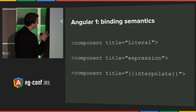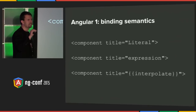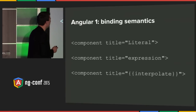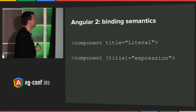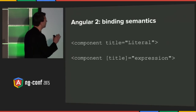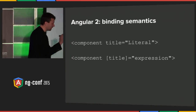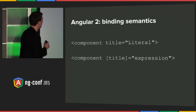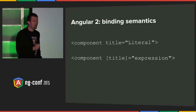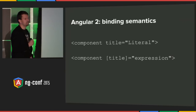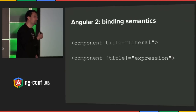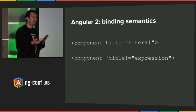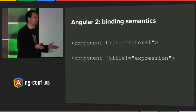It's really the author of the template who should have the choice of which one to write, not the author of the component itself. So we're going to simplify all this and say there are only two different kinds of bindings: either a literal or an expression. We're going to use the bracket syntax for that. The key takeaway is there are only two kinds of bindings, and as far as the component author is concerned, they don't care which one it is — all they care about is that a title will be delivered to them.